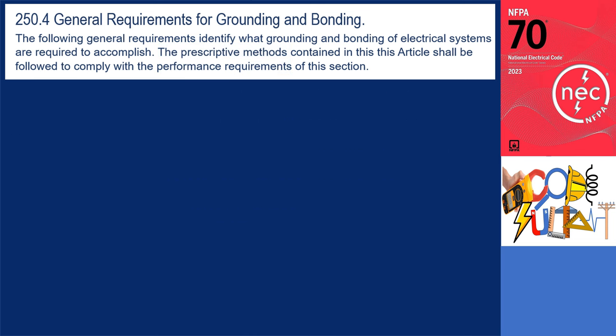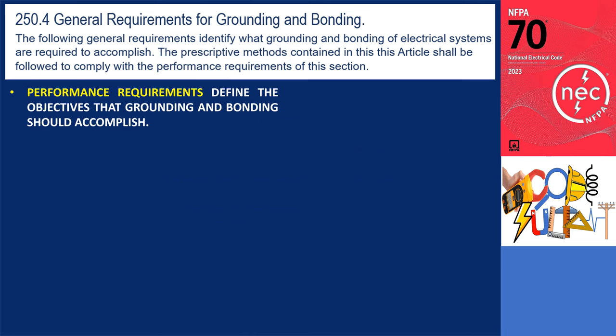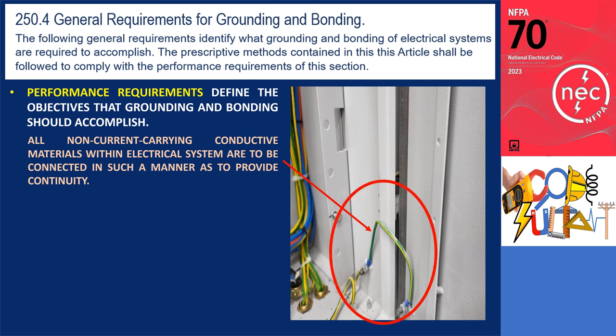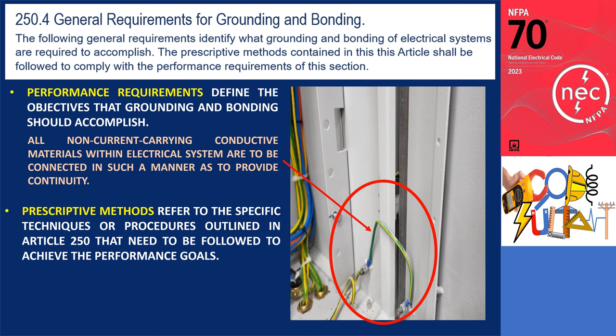Let's further clarify the concept of performance requirements. Performance requirements establish the desired objectives that grounding and bonding practices should achieve — they serve as the benchmark for expected outcomes. For instance, one performance requirement states that all non-current carrying conductive materials within the electrical system must be connected in a manner that ensures continuity. Prescriptive methods refer to the specific techniques or procedures outlined in Article 250 that must be followed to fulfill these performance goals.